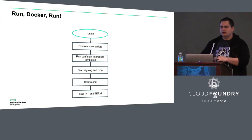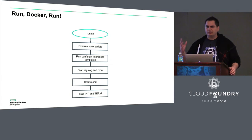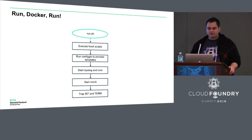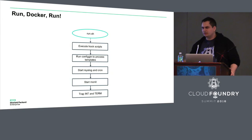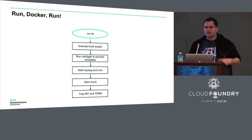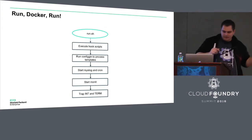How does it run? When you do Docker run one of these things, what happens? The entry point, which we call run.sh, will execute some scripts that are very useful for hooking into the process — so if you have something that needs to change, you could hook into that point. It runs config-in to process all the BOSH templates. It'll then start rsyslog and cron, and finally start Monit. Once Monit starts, all the jobs that Monit is monitoring will start up eventually. We trap int and term signals so that when Docker tries to stop us, we can shut down gracefully.